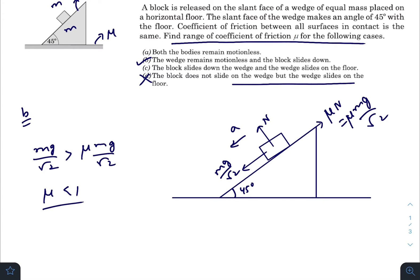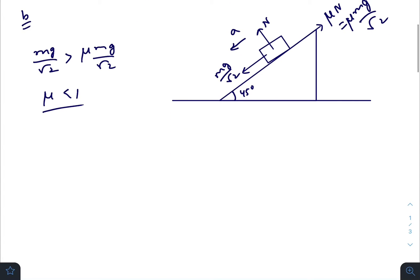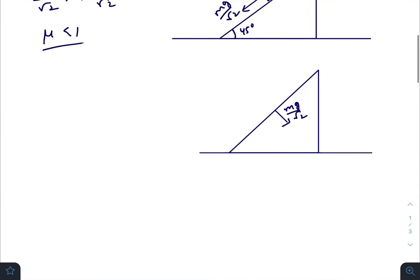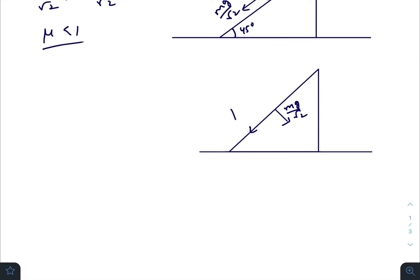Now for the lower limit we need to redraw the free body diagram of the inclined plane. Forces acting on the inclined plane are the normal, that is mg cos 45, and the friction acting downwards, that is μ mg cos 45. The normal due to the ground is N1.